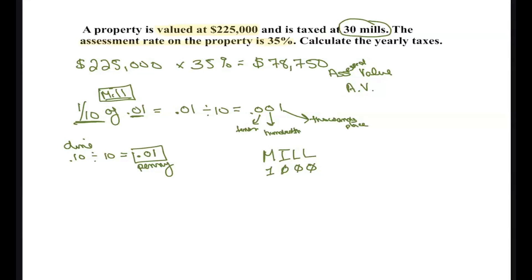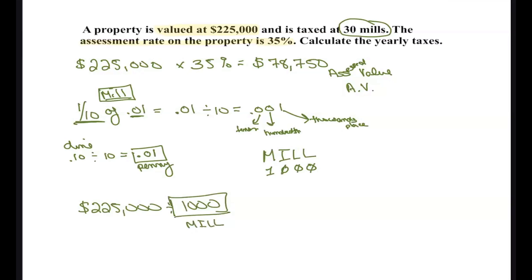The easiest way to do this is take the $225,000 and divide it by 1,000 — that takes care of the mill. And it's not that you're paying just one mill; you're paying at a rate of 30 mills. That's how you get your answer.